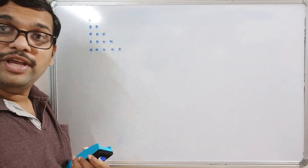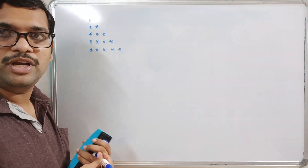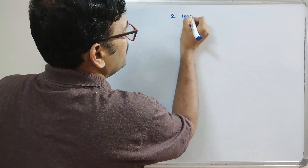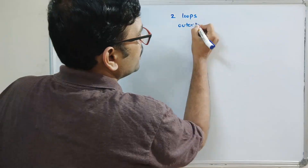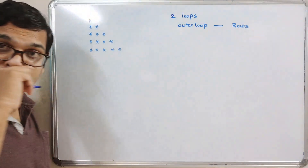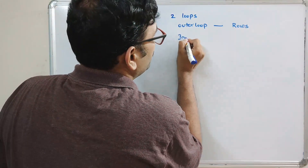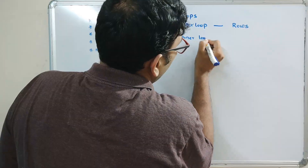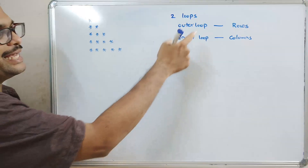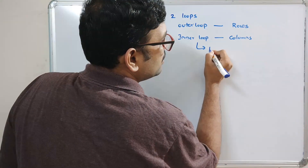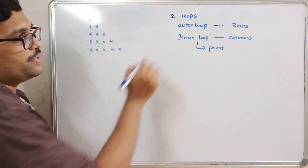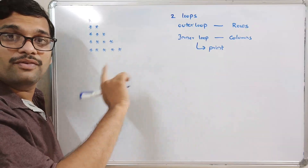We have to write two different loops. The outer loop represents the rows, and the inner loop represents the columns. Inside the inner loop we also write the print statement — that means the output statement.